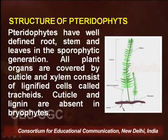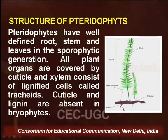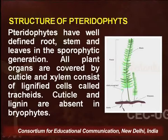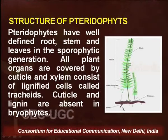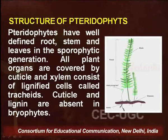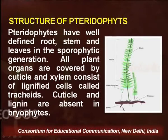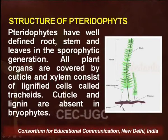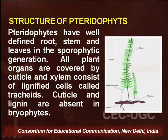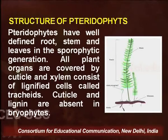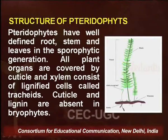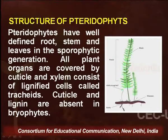As far as the structure of pteridophytes is concerned, pteridophytes have well-defined root, stem and leaves in the sporophytic generation. The sporophytic generation is the most predominant phase in the life cycle. All plant organs are covered by cuticle and xylem consists of lignified cells which are called tracheids. Cuticle and lignin were absent in the case of bryophytes.